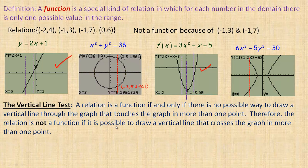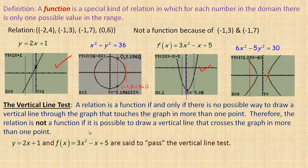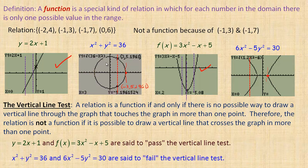If it is possible to draw a vertical line that crosses in more than one point, the relation is not a function. So y equals 2x plus 1 and the parabola are said to pass the vertical line test — they are functions. The circle and the hyperbola are said to fail the vertical line test, so they're not functions. And that's the end of the tutorial.